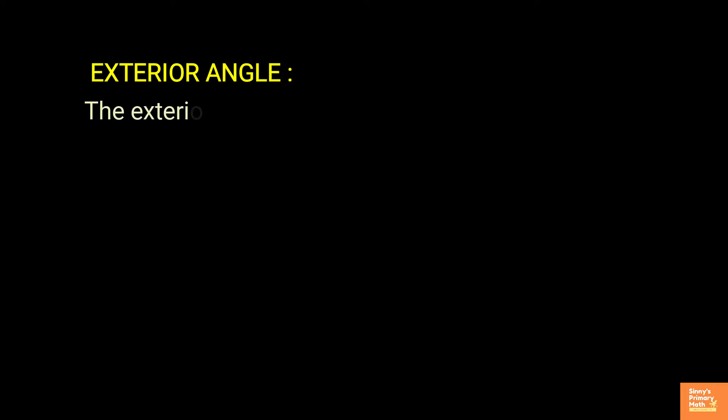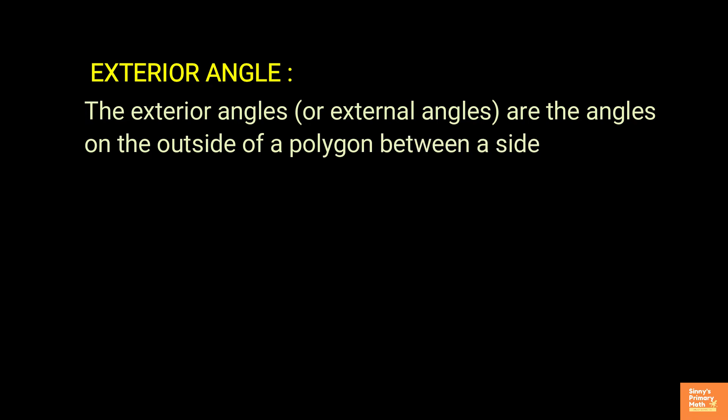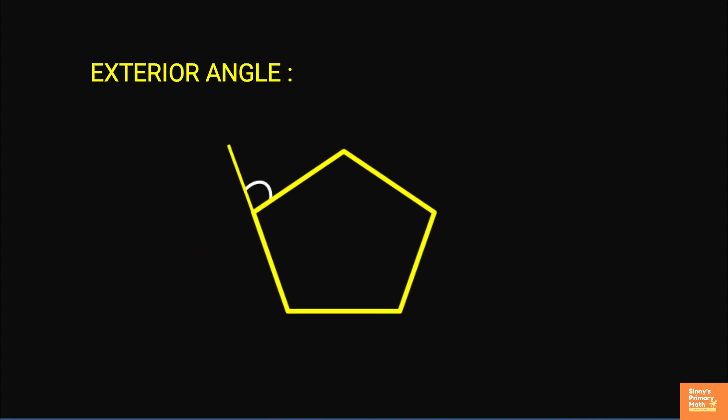Exterior angle - the exterior angles or external angles are the angles on the outside of a polygon between a side and an extended adjacent side. Although there are two possible exterior angles at each vertex, we usually only consider one per vertex.